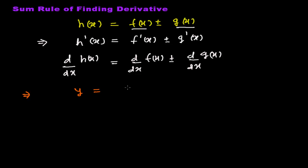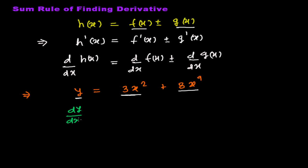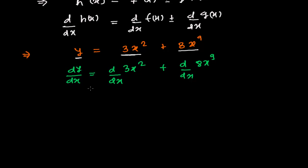Suppose I have a function y equals 3x squared plus 8x to the power 9. Here, 3x squared is one function and 8x to the power 9 is another function, and y is the sum of the two. We've already covered the power rule, so using the power rule one by one: the derivative of y with respect to x equals the derivative of 3x squared plus the derivative of 8x to the power 9. Individually, the sum rule tells us dy/dx is the sum of the individual derivatives.